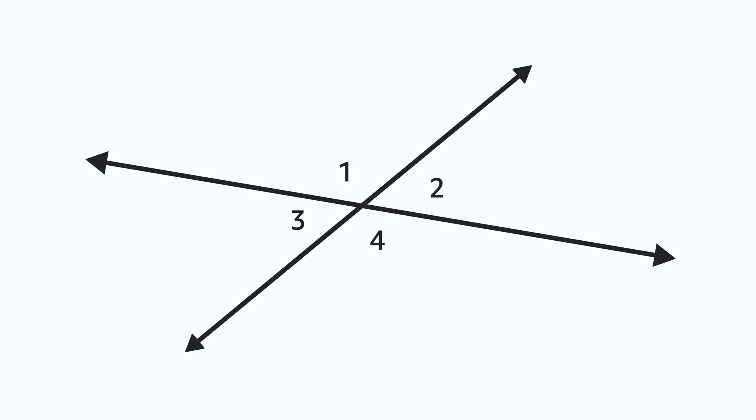So if angle one measures 130 degrees, we can figure out angle two. Because those two angles together form a line and are a linear pair and supplementary. So angle two must be 50 degrees.